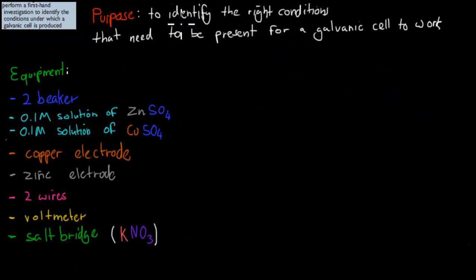So the purpose for this experiment was to identify the right conditions that need to be present for the galvanic cell to work. What I mean by work is for it to produce electricity. Remember that was the big thing about galvanic cells—they make chemicals work to produce electricity, the flow of electrons from your anode to your cathode. So for a galvanic cell to work, it needs to produce electricity.